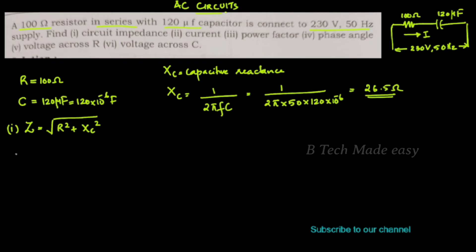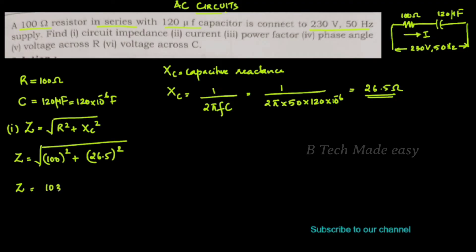Now for the circuit impedance: Z = √(R² + XC²). Substituting R = 100 ohms and XC = 26.50 ohms, we get Z = 103.45 ohms.